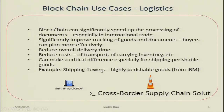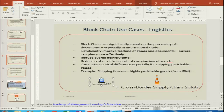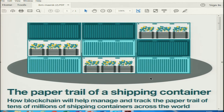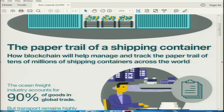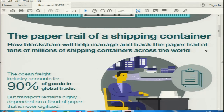One example is shipping flowers and other highly perishable goods. IBM is a company actively in this field of helping companies manage logistics using blockchain. They have developed a case study jointly with the shipping company Maersk. This graphic shows the paper trail of a shipping container carrying flowers — how blockchain will help manage and track the paper trail of tens of millions of shipping containers across the world.